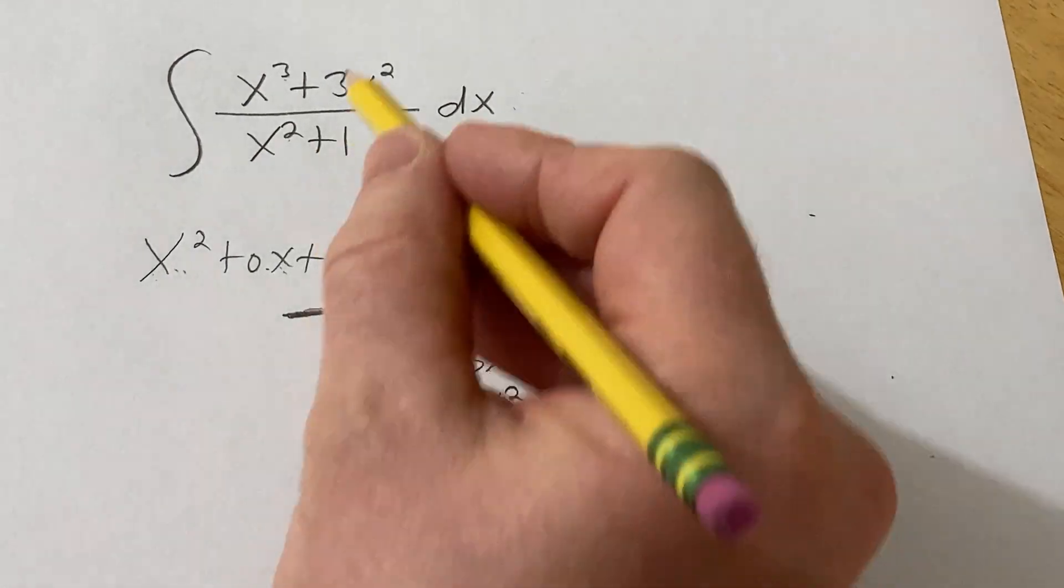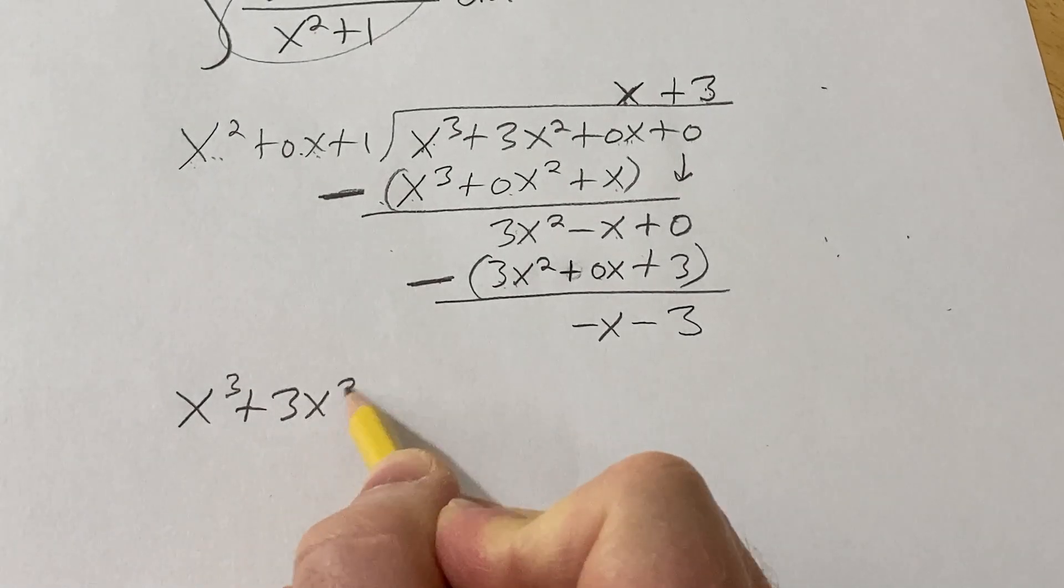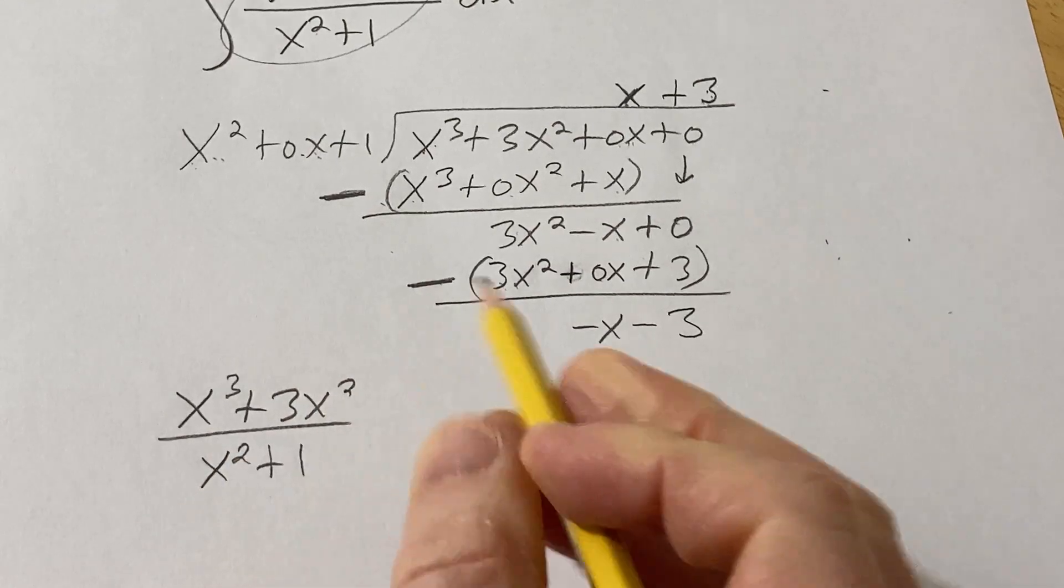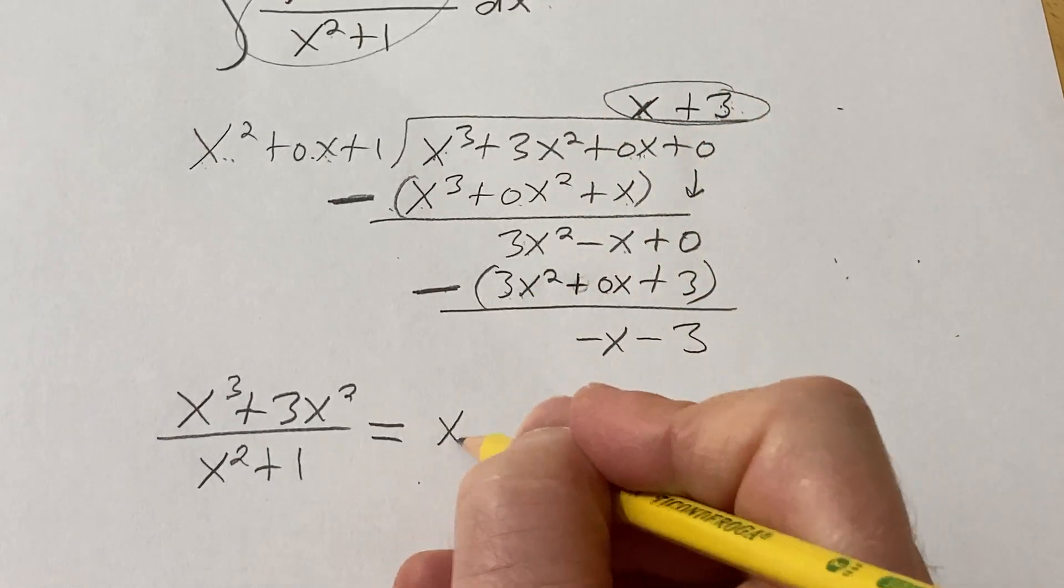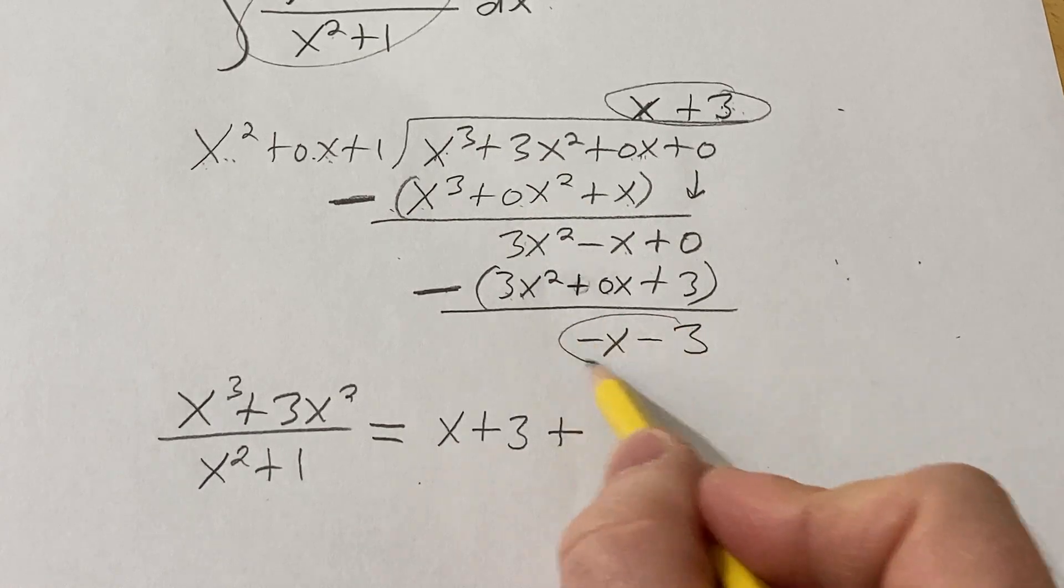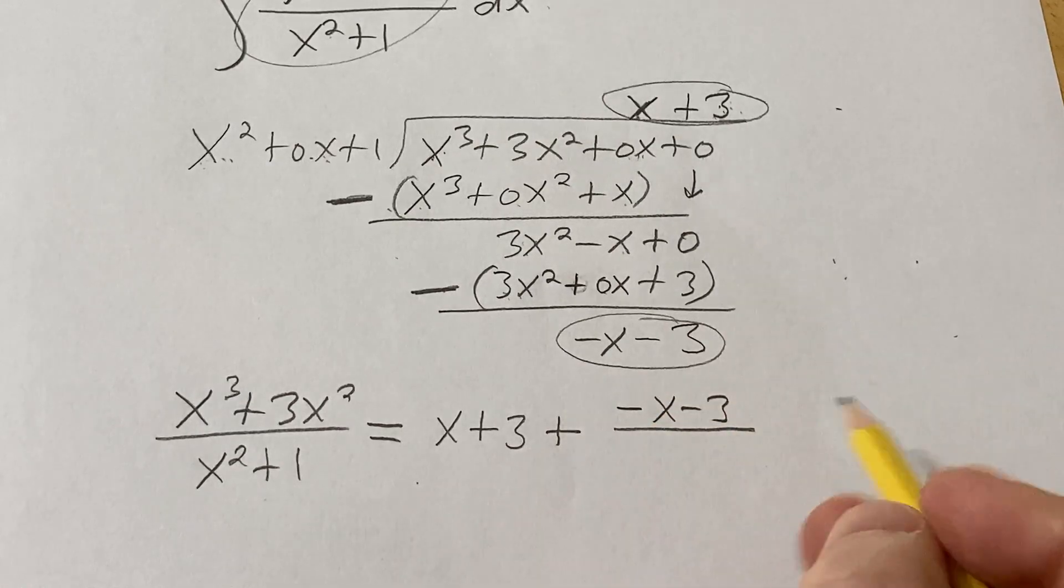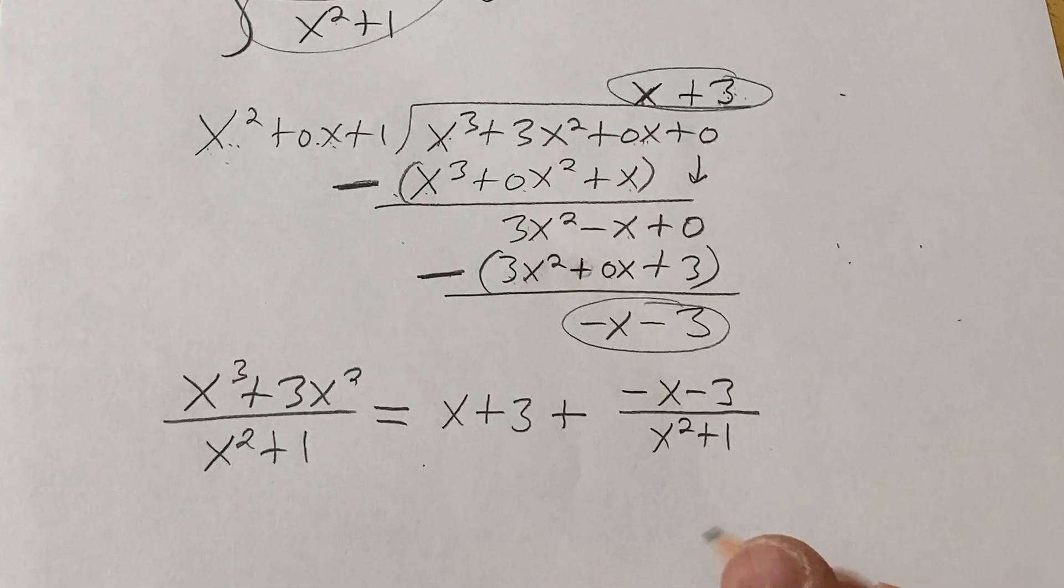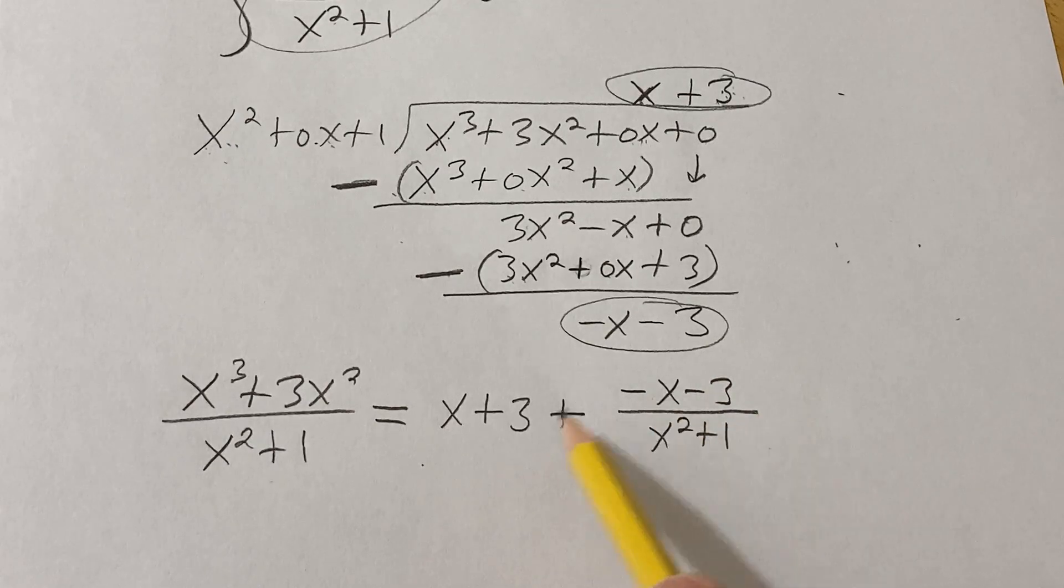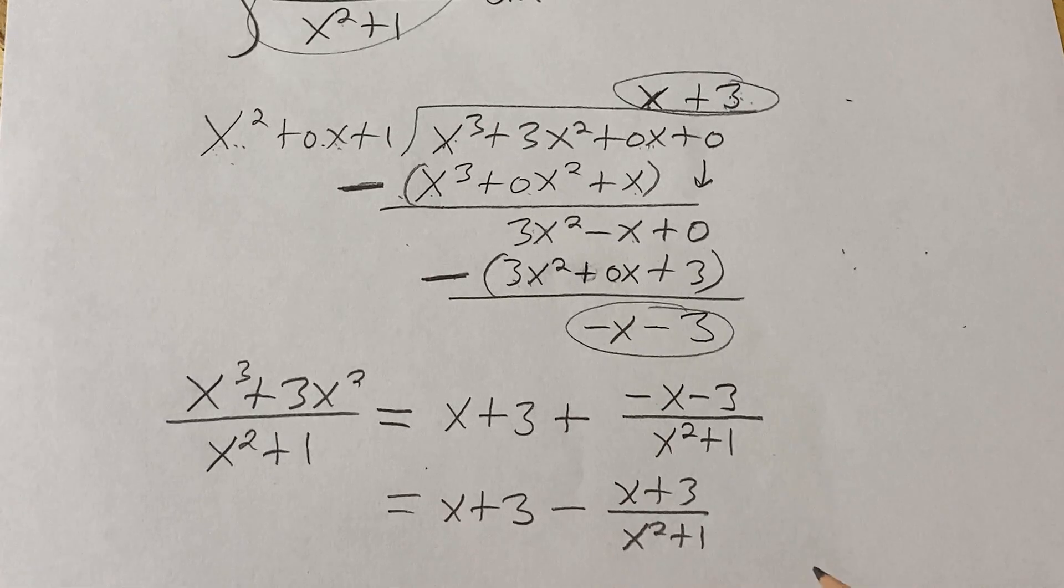So basically what we've done is we have x cubed plus 3x squared over x squared plus 1. That's equal to the quotient, which is x plus 3 plus the remainder, which is negative x minus 3 over the divisor x squared plus 1. And if you prefer, what you can do here is you can write this as x plus 3 minus x plus 3 over x squared plus 1.